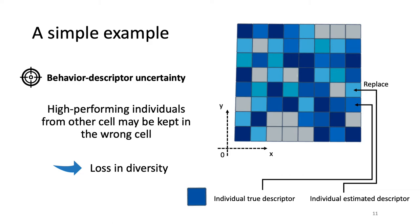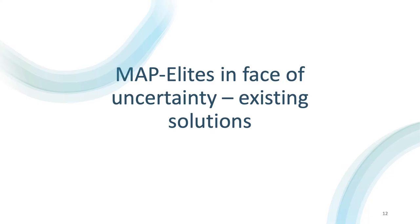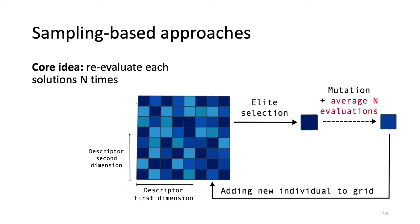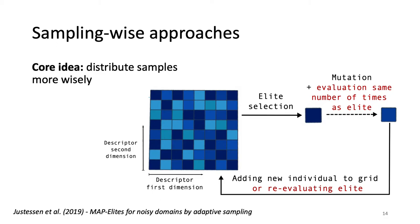This example gives an idea of why quality diversity algorithms have trouble facing uncertainty. The most straightforward existing solution is to use sampling: each time you mutate an elite to get a new individual, you compute a statistic — for example, averaging multiple evaluations — before adding it back to the grid, giving a better estimate of its true fitness and descriptor value. The main limitation of this approach is that it is very data inefficient, which can be impractical in robotics. An alternative is to be more sample-wise in re-evaluating individuals, giving samples to the most promising ones, as done in the 2019 work on adaptive sampling.